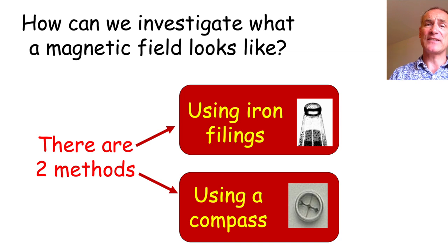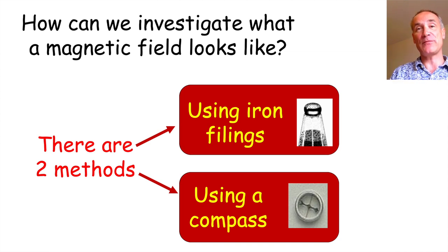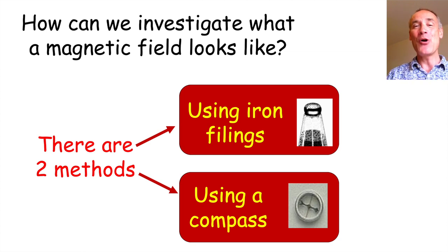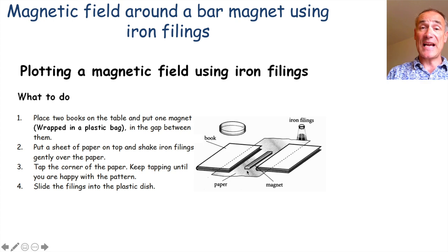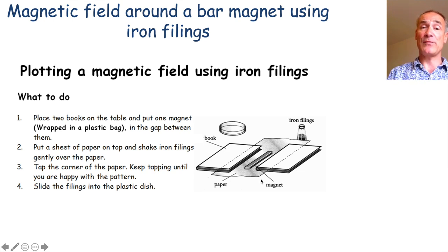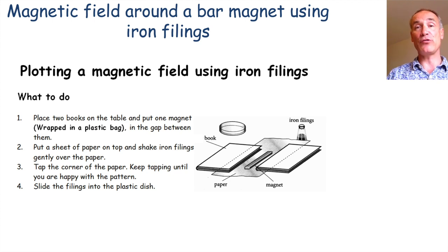So next, how can we investigate what a magnetic field looks like? We've looked at a gravitational field by dropping a cow, but we can't use a cow to test this. There are two ways of doing this — one is to use iron filings and the other is to use a compass. So first of all let's have a look at using iron filings. In a lab you just get two books, here is your magnet, you put a piece of paper on top and shake iron filings over the magnet and tap it, and the iron filings line up along the field lines.